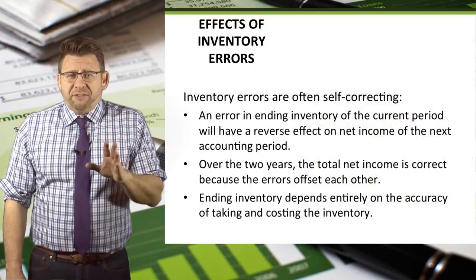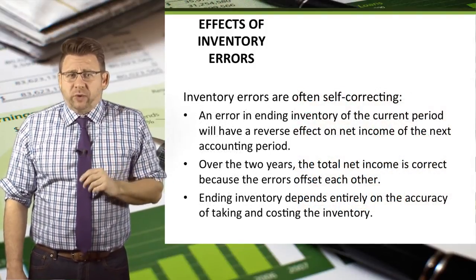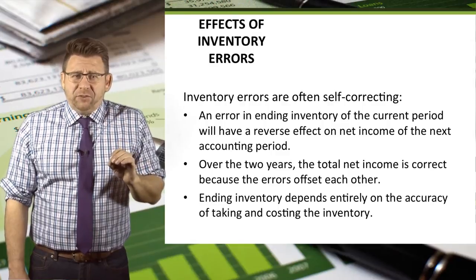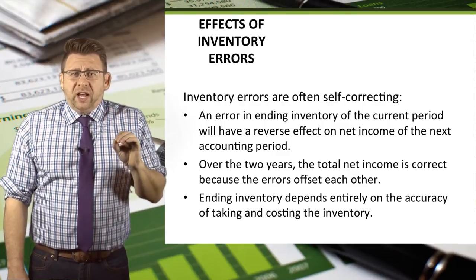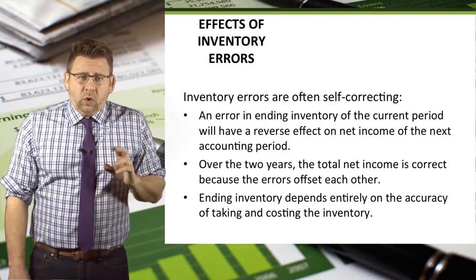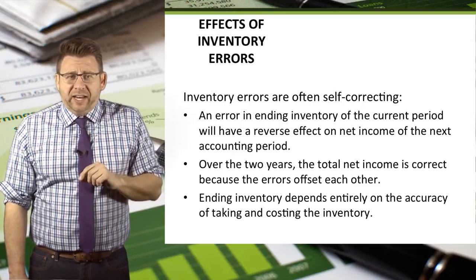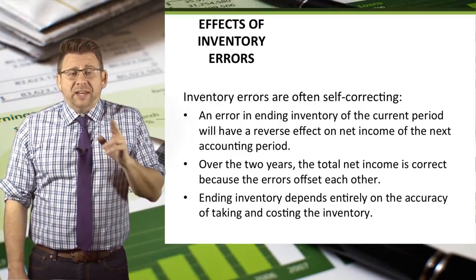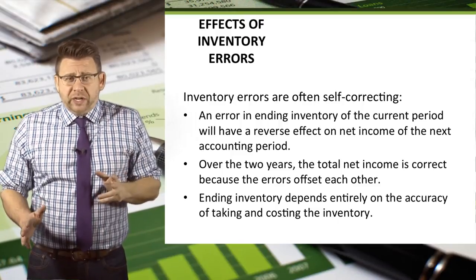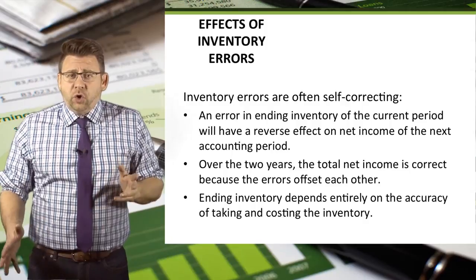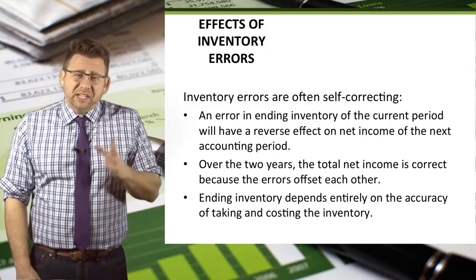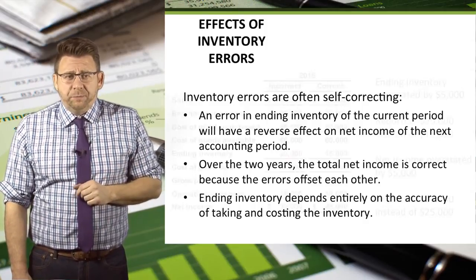Inventory errors are often self-correcting, meaning an error in ending inventory of a current period will have a reverse effect on net income in the next accounting period. So over two years, the total net income is correct because the errors offset each other.